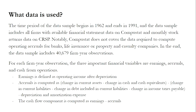The data sample covers 1962 to 1991 and includes all firms with available financial statement data on Compustat and monthly stock returns data on CRSP. Notably, Compustat does not cover the data required to compute operating rules for banks, life insurance, or property and casualty companies. The final data sample includes 40,679 firm-year observations. For each observation, the three key financial variables are earnings, accruals, and cash flow from operations. Earnings is defined as operating income after depreciation. Accruals is computed as change in current assets minus change in cash and cash equivalents, minus the quantity of change in current liabilities minus change in debt included in current liabilities, minus change in income taxes payable, minus depreciation and amortization expense. The cash flow component is computed as earnings minus accruals.